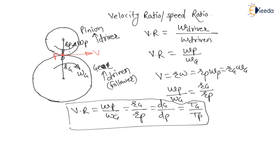My dear students, remember here I have considered pinion as the driver and gear as the driven. If the case reverses, the formula will also reverse — if the gear becomes the driver, then the ratio becomes angular velocity of gear divided by angular velocity of pinion. This is called velocity ratio or speed ratio.